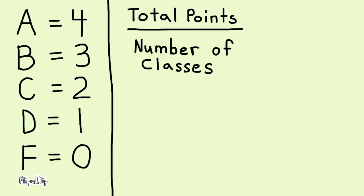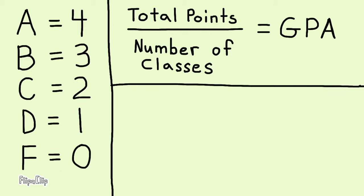The total points divided by the number of classes equals your GPA. Let's say you have an A, a B, a C, another A, and a D.